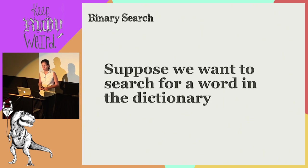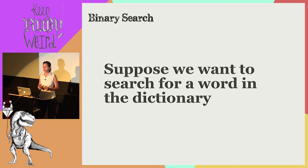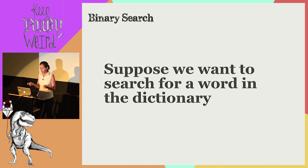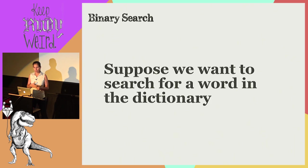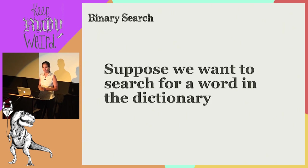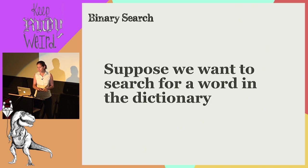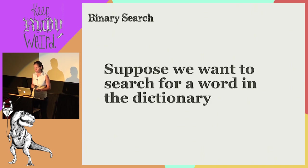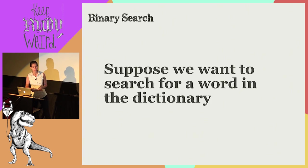Suppose we want to search for a word in the dictionary. If we look for the word Ruby, for example, we open the dictionary somewhere in the middle and figure out whether it's before or after R, then adjust accordingly. Binary search works very similarly. It's an algorithm that takes a sorted list of elements, and if the element we're looking for is in that list, it returns the index of where that object is. If it can't find it, it returns null.